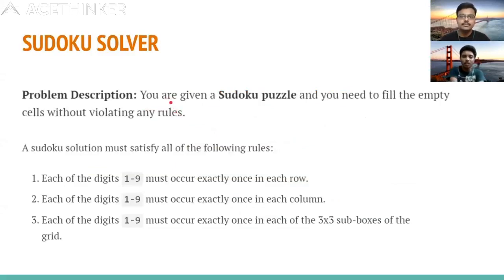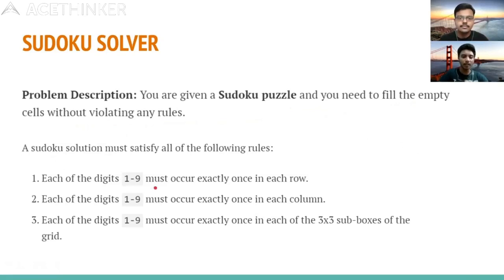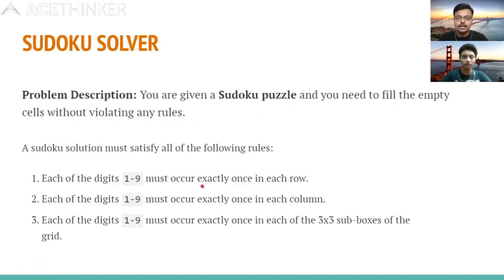Our problem statement is to solve a given Sudoku puzzle such that it does not violate any rules. The rules are that any row, column, and box should not have a repeating digit from 1 to 9. In each row, column, and each subgrid, the numbers should be from 1 to 9.